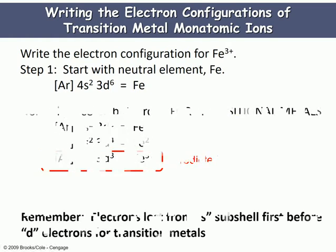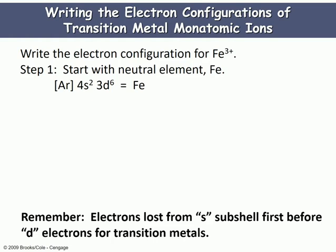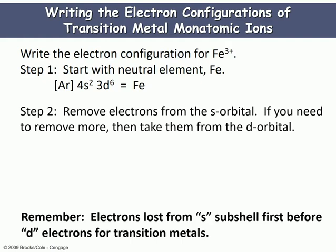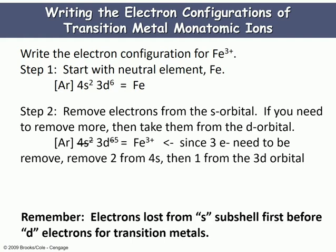When you need to write an electron configuration for iron or any D-block transition metal, this is what you've got to do to get the correct configuration that predicts its properties. We're actually going to remove electrons from the S orbitals — not the D. So for transition metals, we take electrons from the S first, then the D. For iron plus 3, we take two away from the 4S orbital, removing two electrons, then reduce the 3D6 down by one more. The actual electron configuration for iron plus 3 is argon 3D5.